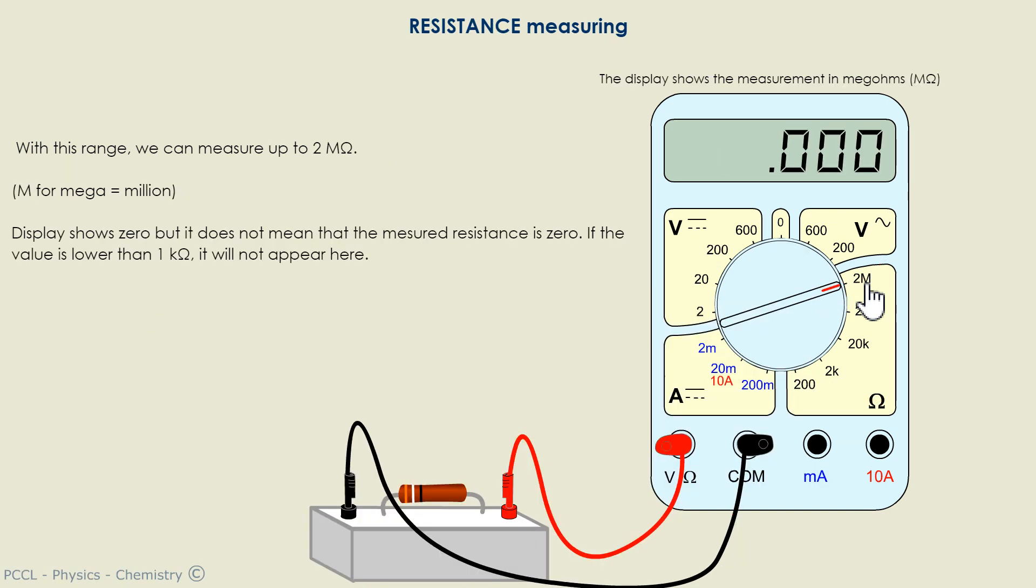We can measure resistances. By putting on 2 mega ohms or 200 kilo ohms, 20 kilo ohms, the screen showed zero because I was on very large ranges.